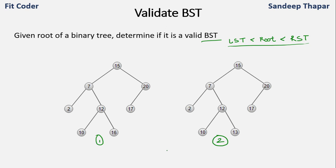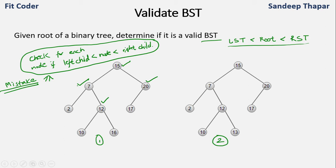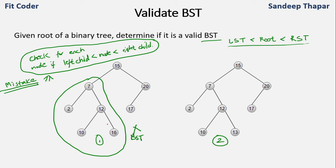This is a quite important question usually asked in interviews, and the mistake most people make is they check for each node if the left child is smaller and the right child is greater. But this is a mistake. For tree one, following this approach you'll see that for 15 this property is true because 7 is less than 15 and 20 is greater than 15, and similarly for 7, 12, and 20. So the first tree would appear to be a BST, but it is not, because the left subtree of 15 has node 16 which is greater than 15, so the BST property fails. The second tree, however, is a valid BST.